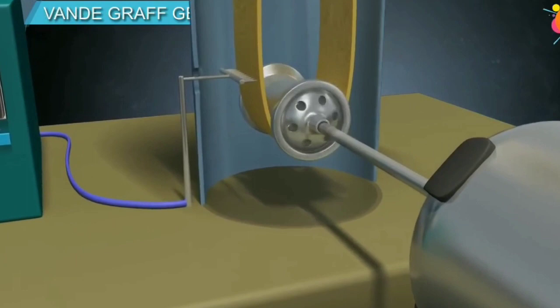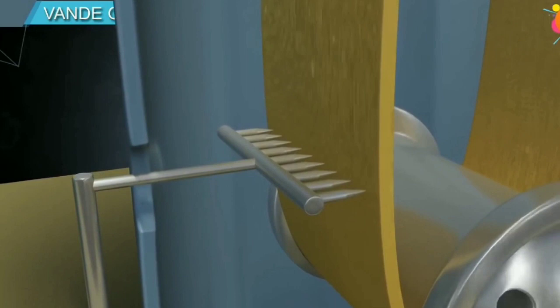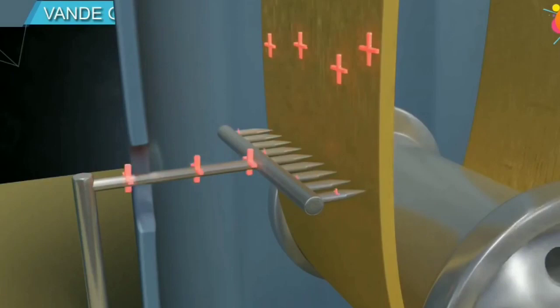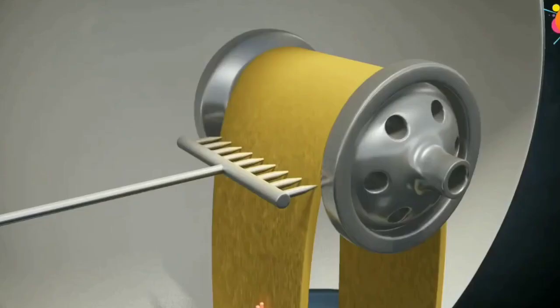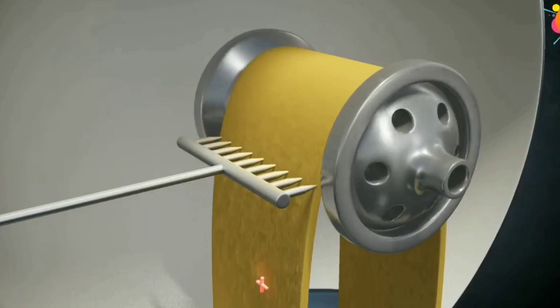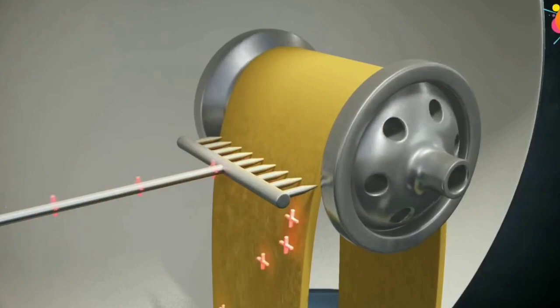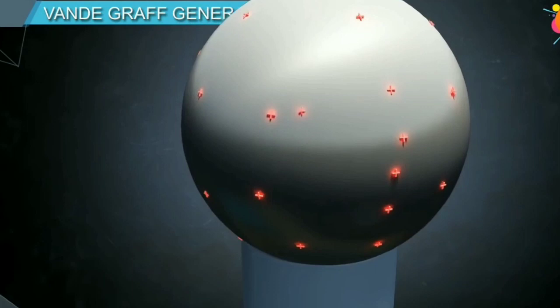When the motor is turned on, the belt moves over the pulley. The spray comb positioned near the lower roller, which is connected to high positive potential, sprays positive charges on the outer side of the belt. Charges on the belt are carried upwards and are collected by the receiver comb on the top of the generator. Since the upper comb is connected to the hollow conductor, the charge gets transferred to the hollow sphere.